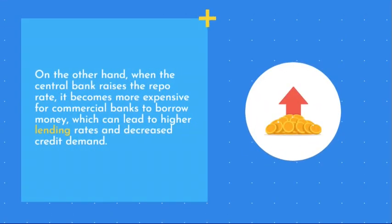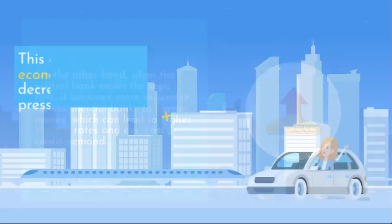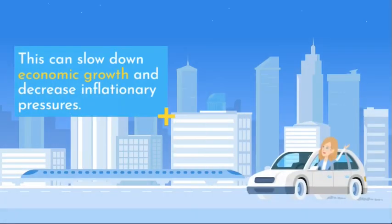On the other hand, when the central bank raises the repo rate, it becomes more expensive for commercial banks to borrow money, which can lead to higher lending rates and decreased credit demand. This can slow down economic growth and decrease inflationary pressures.